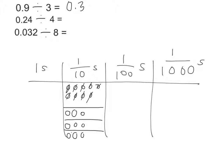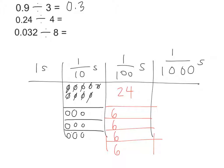Next: 24 hundredths. I could draw 24 disks in the hundredths column, but instead I'll just write 24 hundredths. I want to split it equally into 4 groups — so I draw 4 groups. How many go in each group? 6. So I put 6 here, 6 here, 6 here, and 6 here. When I share 24 hundredths equally among 4 groups, each group gets 6 hundredths, or 0.06.